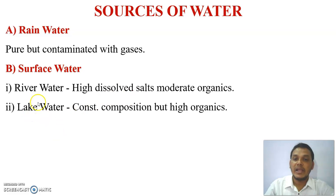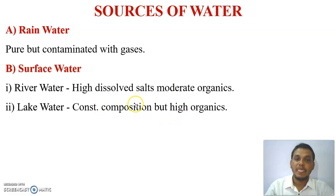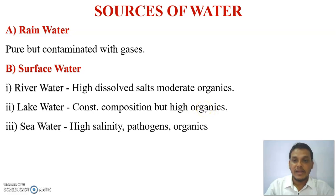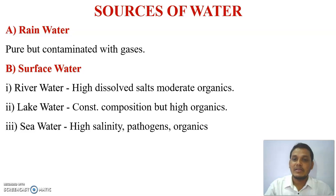The second type of surface water is lake water, which has a constant composition containing organic and inorganic waste, and also a high quantity of organic matter. Then there is sea water, which contains a high concentration of salts and therefore has very high salinity.